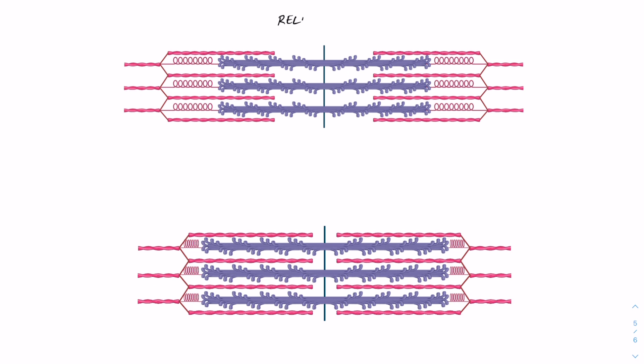So to start us off, let's have a look at once again the functional unit of a muscle fiber, and that is the sarcomere. So up the top, we have a sarcomere in the relaxed state.